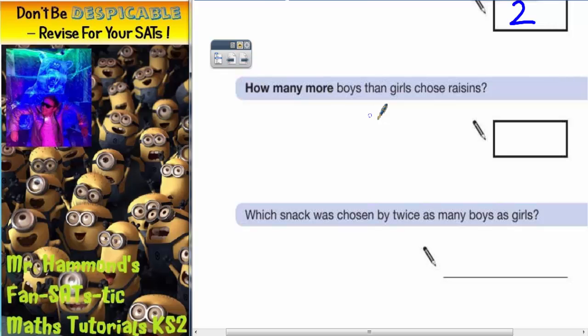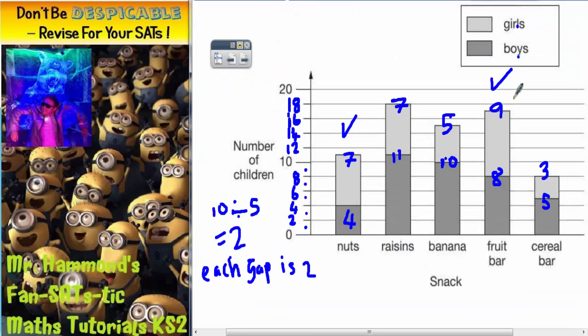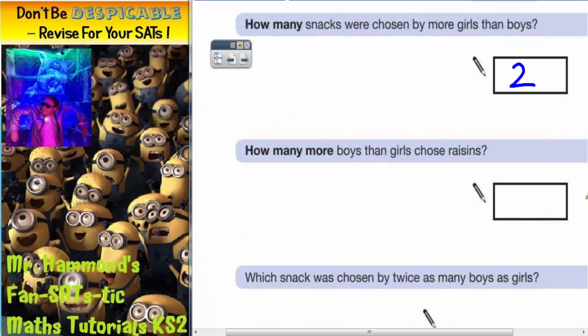How many more boys than girls chose raisins? This time we're looking specifically at the raisins bar. It was 11 boys and 7 girls. So 11 is actually 4 more than 7. The answer is 4 because 11 minus 7 is 4. That's the difference between them.